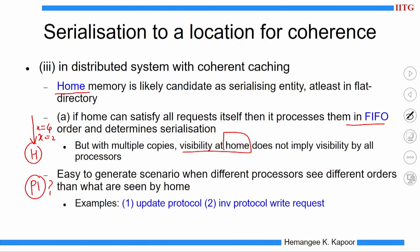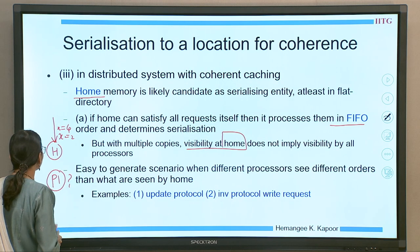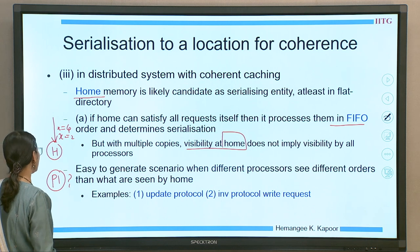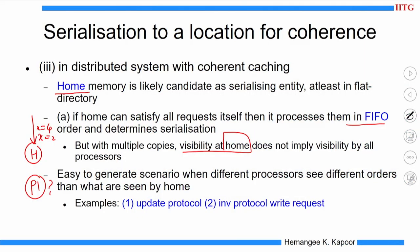This may or may not be guaranteed because the network does not guarantee point-to-point transaction ordering. The order in which updates to X are seen — H saw X as 2 first and then as 4 — is not guaranteed to be the same at P1, because they are separated by a large network. We are going to see counter-examples to show that visibility at home does not imply visibility at the processors. We will first try with an update-based protocol and second with an invalidation-based protocol.